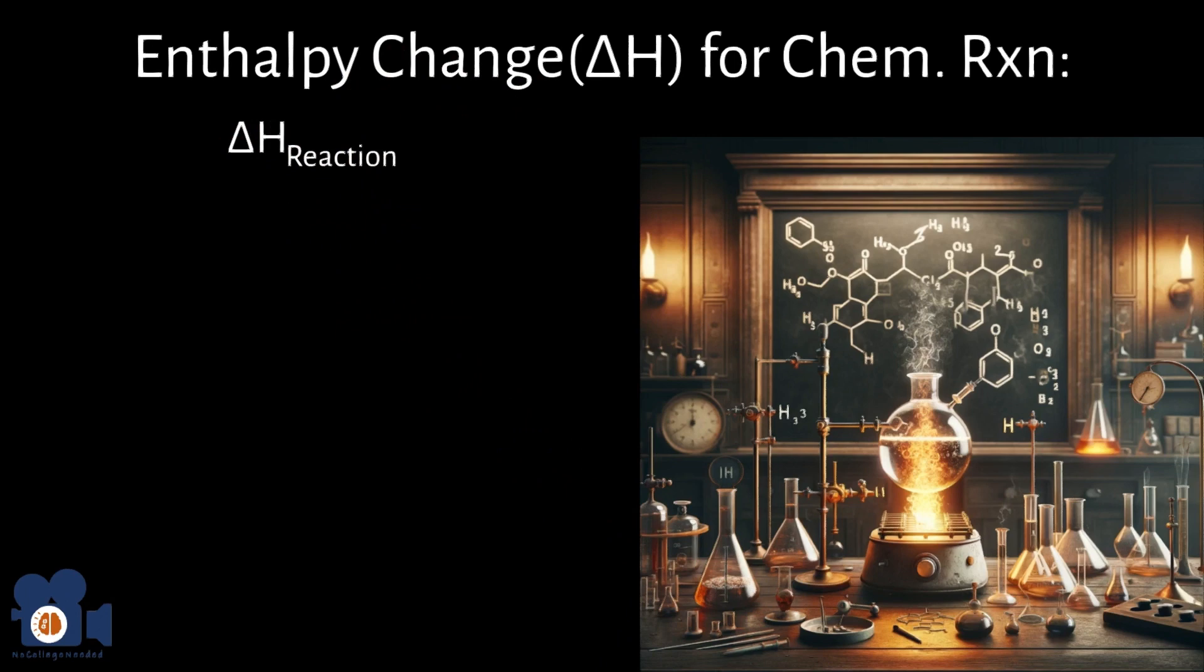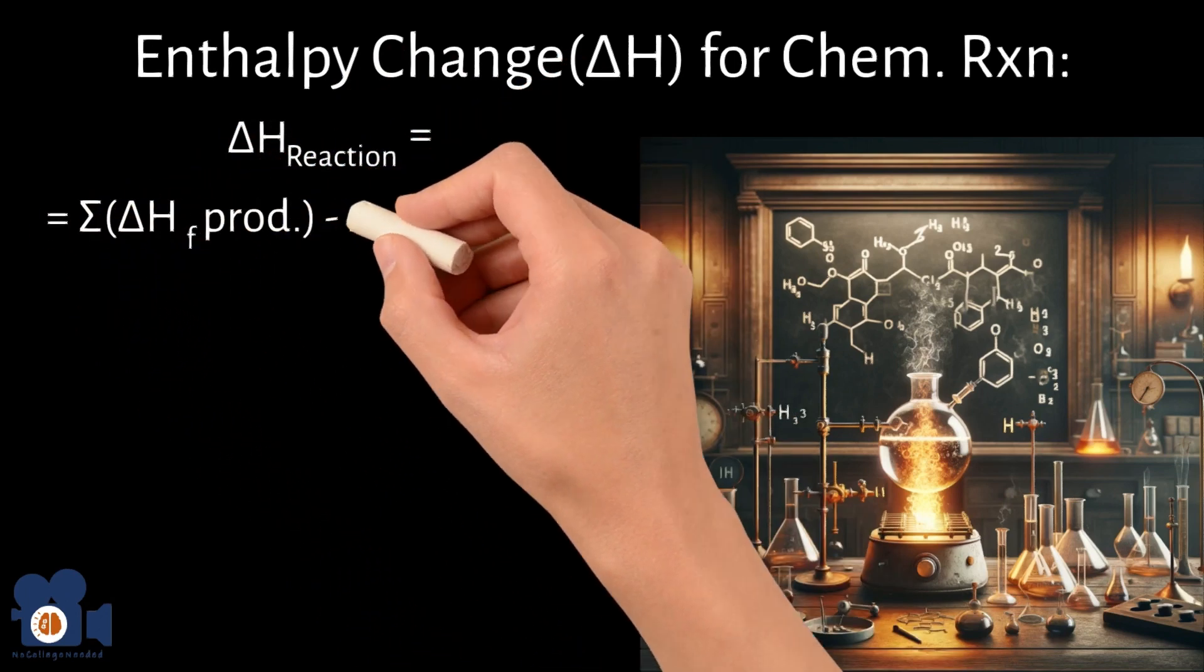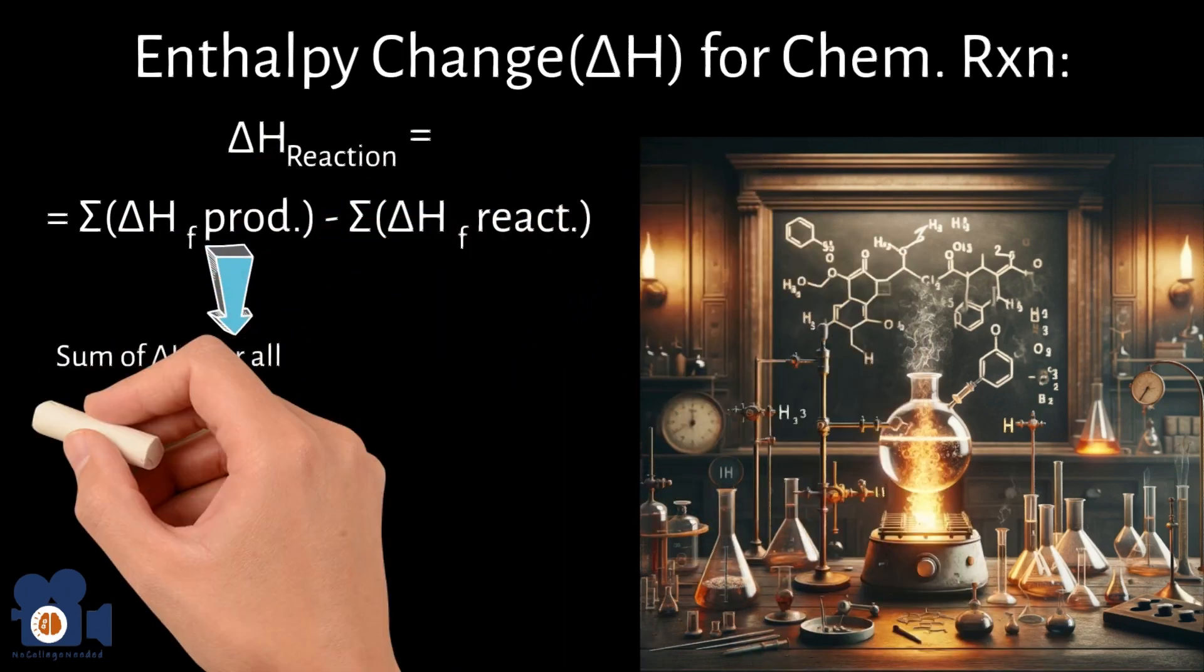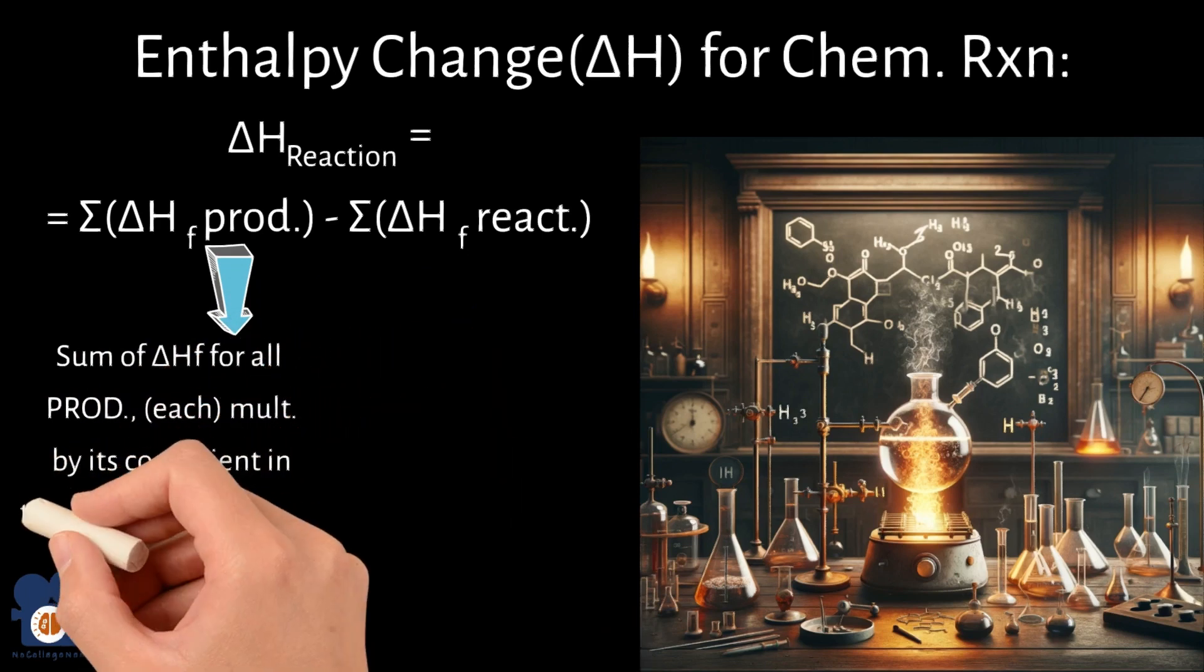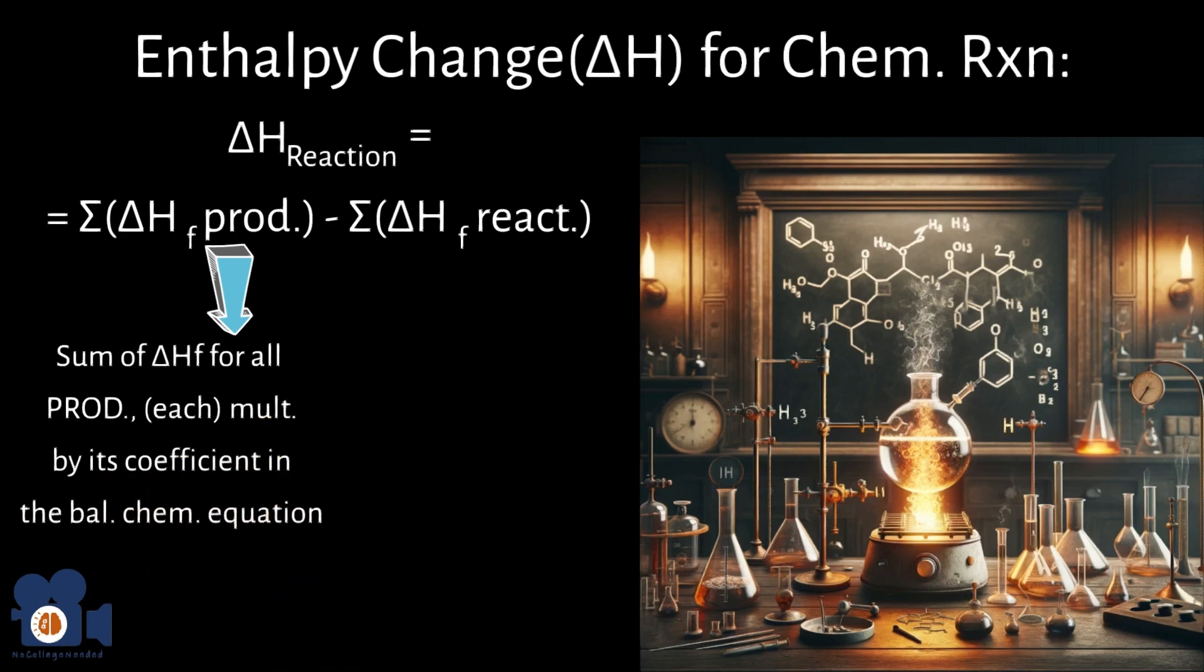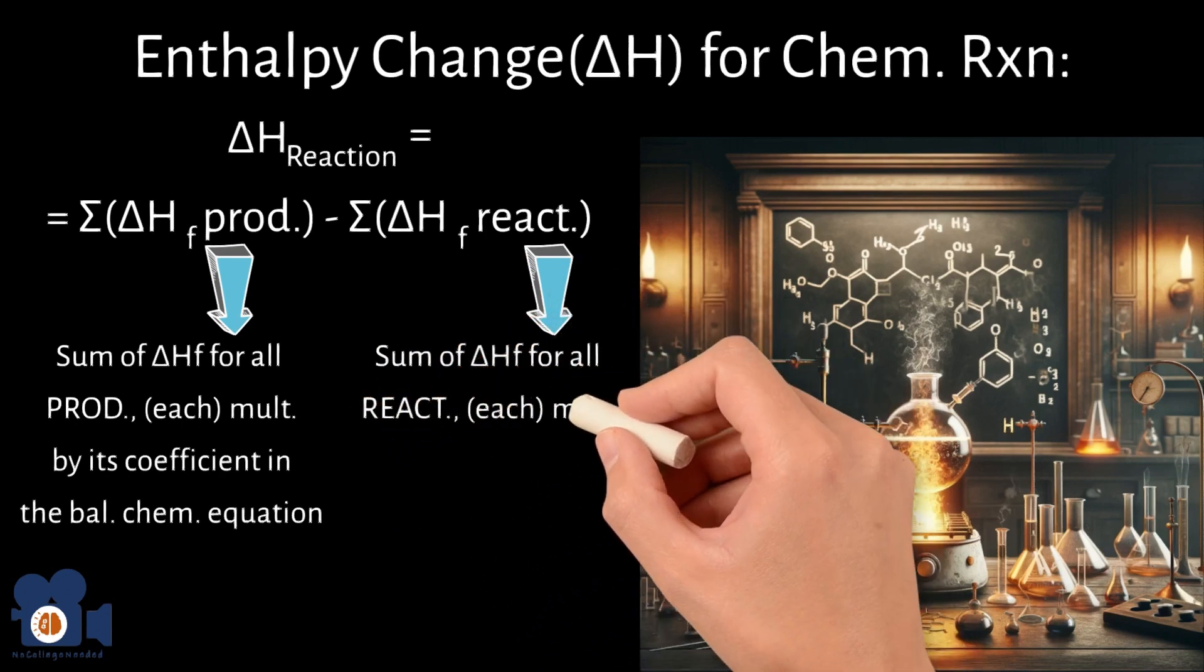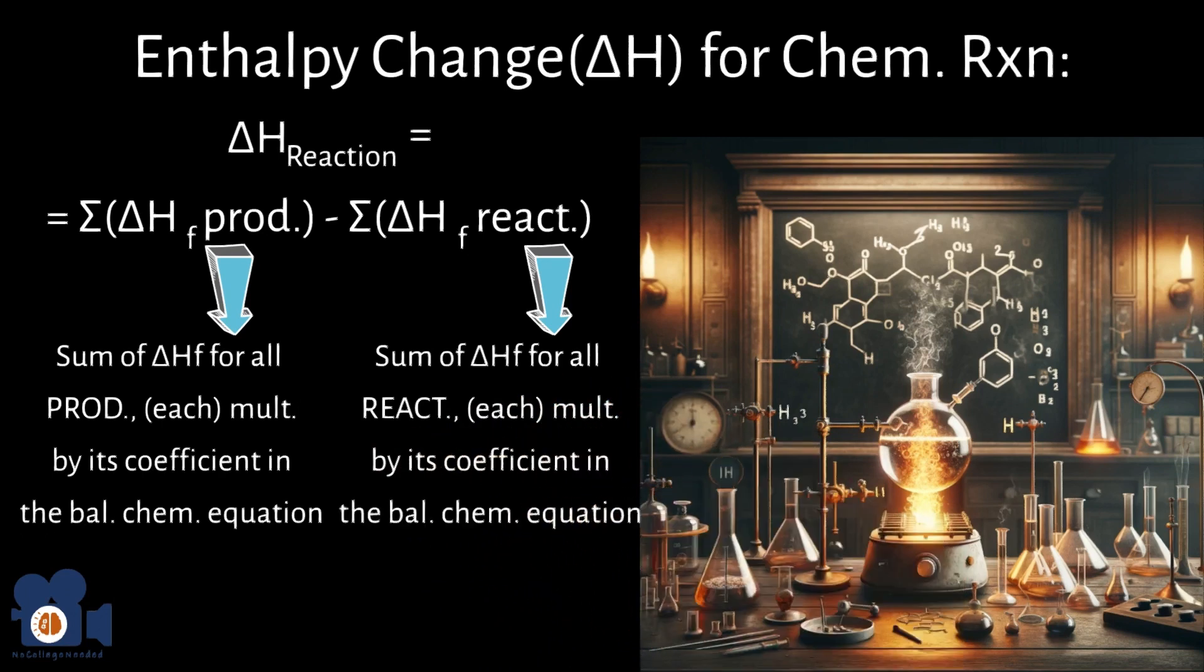The enthalpy change for a chemical reaction can be calculated using the enthalpies of formation and the following equation. Delta H reaction equals the sum of delta HF of the products minus the sum of the delta HF of the reactants, where the sum of delta HF of products equals the sum of the standard enthalpies of formation for all the products, each multiplied by its coefficient in the balanced chemical equation. And sum delta HF of reactants equals the sum of the standard enthalpies of formation for all reactants, each multiplied by its coefficient in the balanced chemical equation as well.